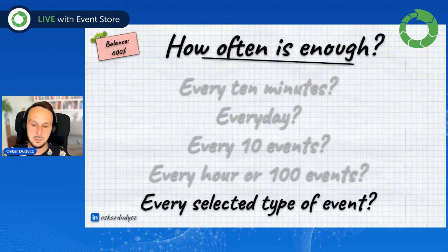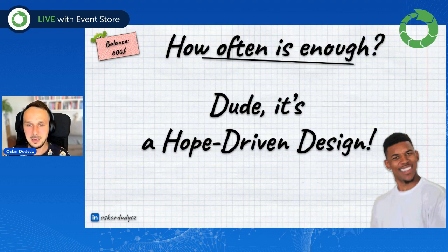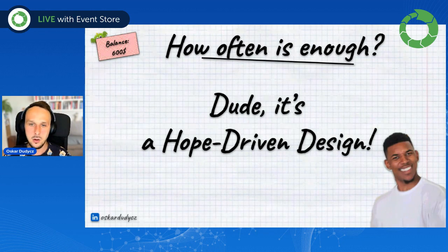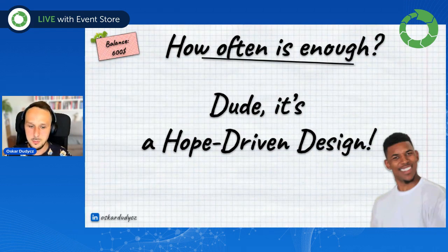Another idea is maybe every selected type of event — maybe we can define that. However, to be honest, that's a hope-driven design, because we are hoping that we will be able to precisely set how often is enough. And in many industries, like e-commerce, that's almost impossible. We might have relatively slow traffic at regular days, but if we have days like Black Friday, or right before Christmas, or if we are running an eventing system to register people for concerts like Ticketmaster — let's say Beyoncé comes to your hometown — then it's definitely a challenge to say precisely how often is enough.